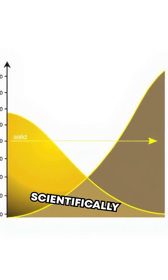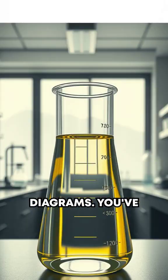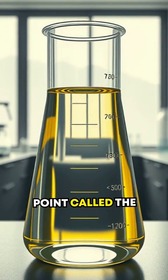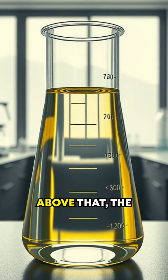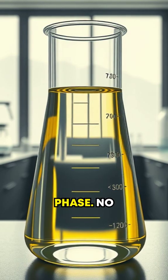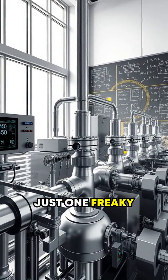Now, scientifically speaking, this state is explained through phase diagrams. You've got the temperature and pressure axis, and there's this point called the critical point. Above that, the liquid and gaseous phases merge into one continuous phase. No boiling, no condensation, just one freaky hybrid phase.